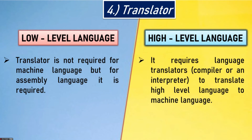Fourth point: translator. For low level language, a translator is not required for machine language because machine language is directly understood by the computer — but for assembly language, a translator is required. High level language requires a language translator — a compiler or an interpreter — to translate high level language into machine language.